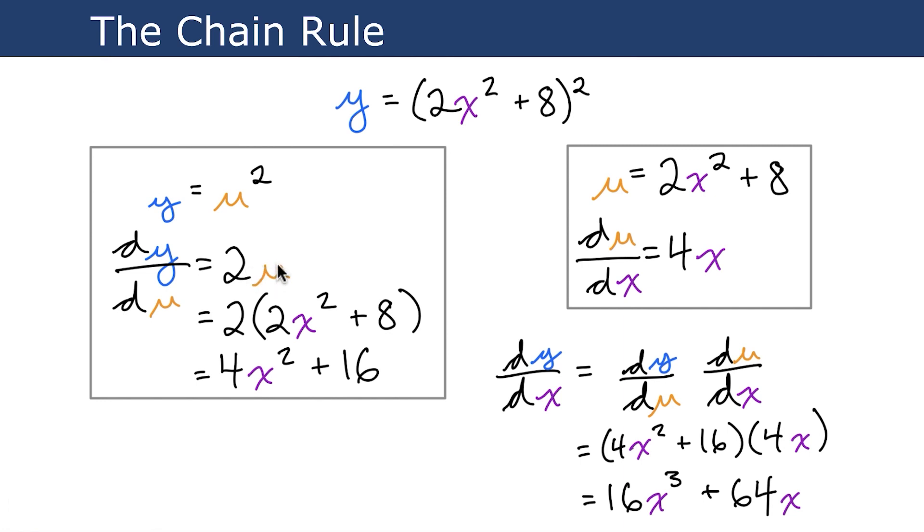And now that we've done that, we can grab u and multiply it out. So we just substitute in 2x² + 8 in for u here, and 2 times each of these terms gives us 4x². So 2 times 2x² is 4x², and 8 times 2 is 16.